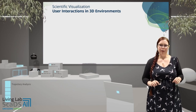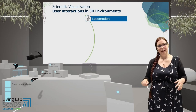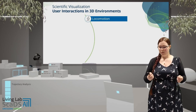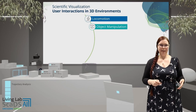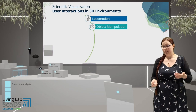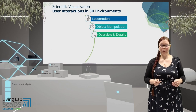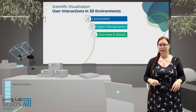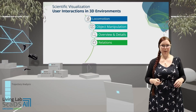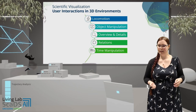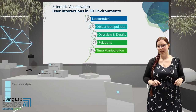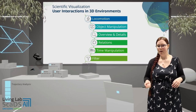There are several tasks that a user should be able to perform in a 3D environment. This includes moving around in the scene, which can be done by teleportation, by steering with a controller, or by walking. The user should also be able to manipulate objects — select them, translate them, rotate them, and even scale them. Providing overviews and details is also important, done by zooming, expanding details, or getting hover information. Time manipulation is also an important task, which includes animation or selecting certain time steps.